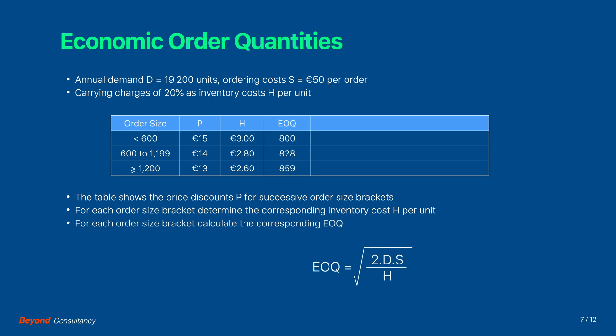The next step is to calculate the economic order quantity for each order size bracket. This is done using the formula provided, where the demand D is 19,200 units, the ordering costs S are 50 Euro per order, and the inventory costs H are as specified for each order size bracket. The economic order quantities for the respective brackets are 800 units, 828 units, and 859 units.